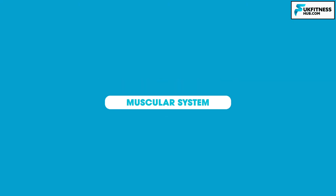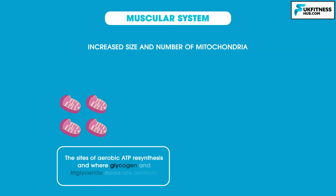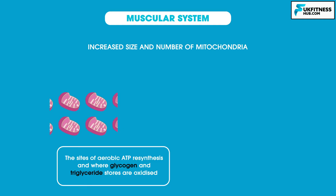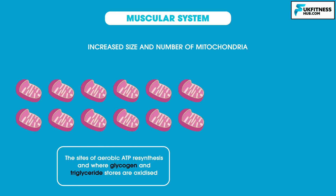Now let's move on to the long-term adaptations of training to the muscular system. First, we have an increased size and number of mitochondria. Mitochondria are the sites of aerobic ATP resynthesis and where glycogen and triglyceride stores are oxidized. The greater the number and size of mitochondria located within the muscle, the greater the ability to resynthesize ATP aerobically.